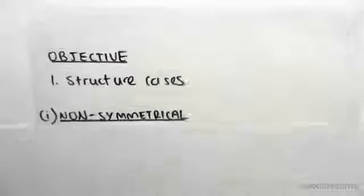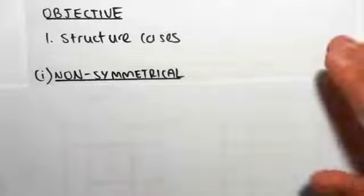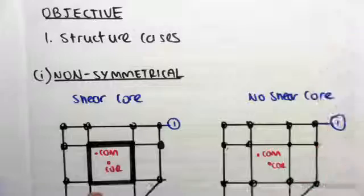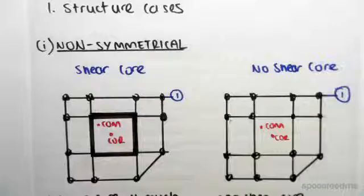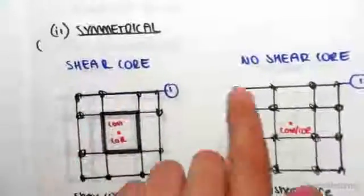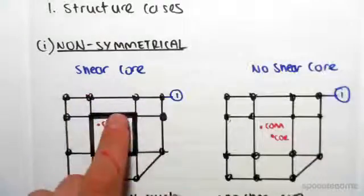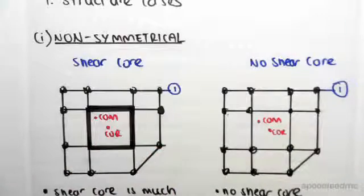We're going to be looking at some cases here. Let's say our structure is non-symmetrical. What I mean by non-symmetrical is that about the x and y axes, it's not perfectly symmetrical. Symmetrical looks like a perfect square, whereas these aren't perfect squares.